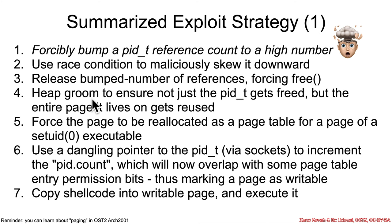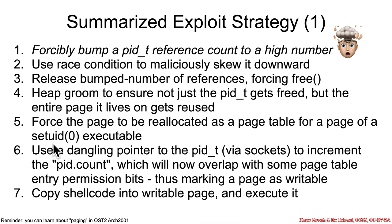Then there's going to be some heap grooming. In this particular exploit, what the author chose to do was not just have the PID-T get freed and then try to overwrite the exact location it was. Instead, they want the entire page of memory where that PID-T existed to be freed so that later on it could be reallocated — and the hope was that it would be reallocated as a page table holding a reference to a setUID executable. If setUID zero, that means it's an executable that will always run as root. They heap groom, make sure the entire page gets freed, but they have the dangling pointer because they used this race condition to cause a premature free.